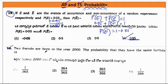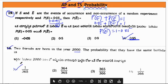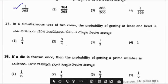Next question: Two friends are born in the year 2000. The probability that they have the same birth date is 1/365 as we have 365 days in a year.